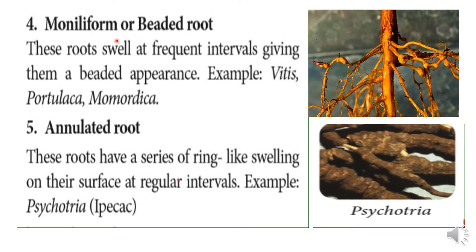Next, Moniliform or Beaded Root. Moniliform roots have a bead-like variable appearance. There are bead-like swellings in the region, separated by narrow portions, giving a beaded appearance. For example, Vitis (grapes plant) and Momordica.